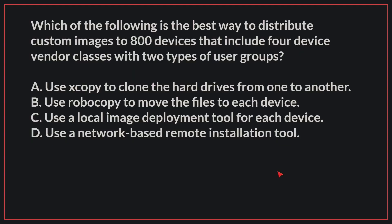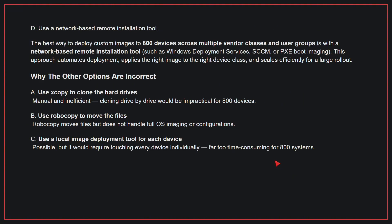Which of the following is the best way to distribute custom images to 800 devices that include four device vendor classes with two types of user groups? The correct answer is D, use a network-based remote installation tool. The best way to deploy custom images to 800 devices across multiple vendor classes and user groups is with a network-based remote installation tool. This approach automates deployment, applies the right image to the right device class, and scales efficiently for a large rollout.